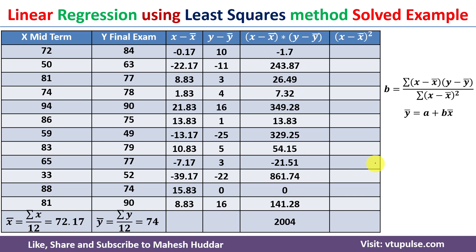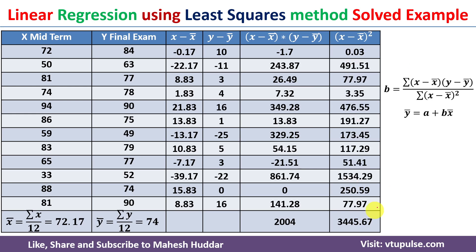Once all the multiplication terms are calculated, we take the summation of (x minus mean of x) times (y minus mean of y), which equals 2004. Next we calculate the denominator: (x minus mean of x) squared for each row, then take the summation, giving 3445.67.